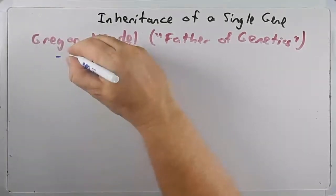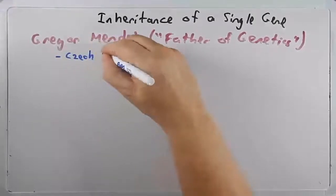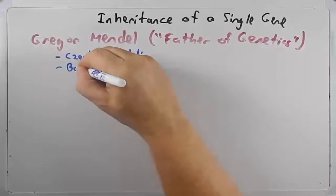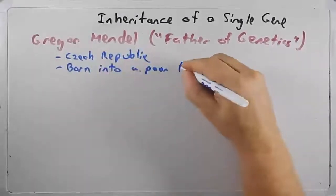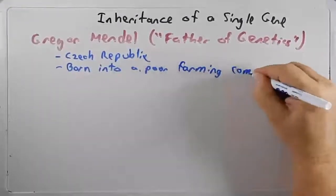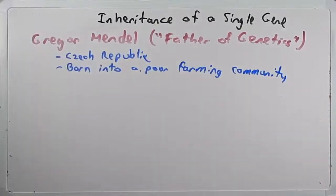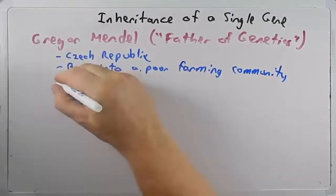Now, a few things about Gregor Mendel that I'd like to tell you about to give you a little bit of the background on him. He was born and raised in what is now the Czech Republic. He was born into a poor farming community, and because of this, from an early age, he understood and was fascinated with planting crops, looking at their traits, which of course would be useful later in his life.